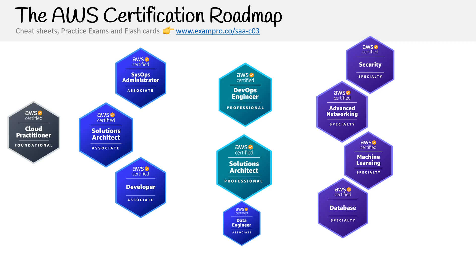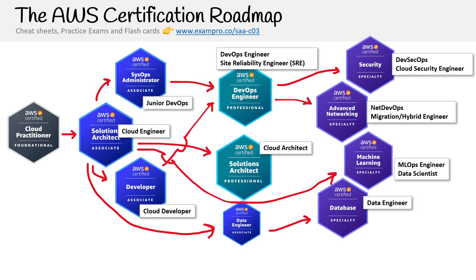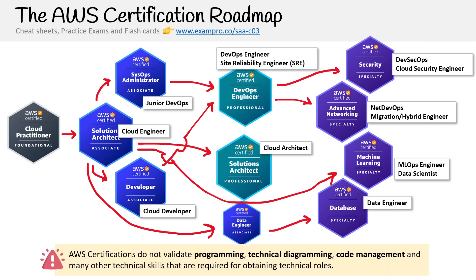Let's take a look at the AWS certification roadmap. As of today, these are the certifications that are available, and these are the lines I've drawn as possible paths you can take and possible cloud-related roles you might want to target. I do want to point out that AWS certifications do not validate programming, technical diagramming, code management, and many other technical skills required for obtaining technical roles.